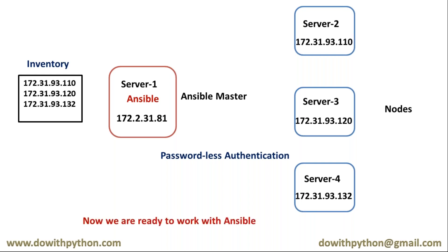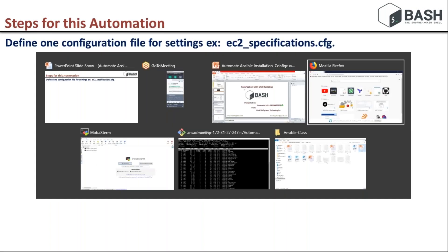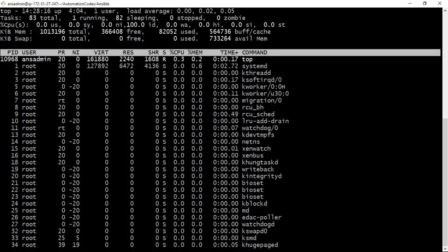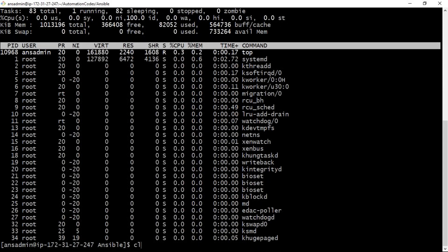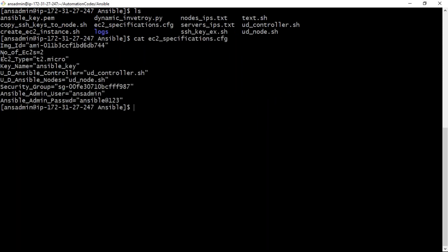Now I am going to show the steps for this entire automation task. The first step is a configuration file. In that configuration file I will provide the required parameters. I already have a ready-made script here — it's the EC2 spec configuration.